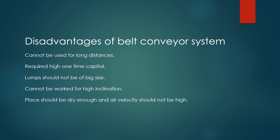Disadvantages of Belt Conveyor System: cannot be used for long distances, requires high one-time capital, lumps should not be of big size, cannot be worked for high inclination, place should be dry enough, and air velocity should not be high.